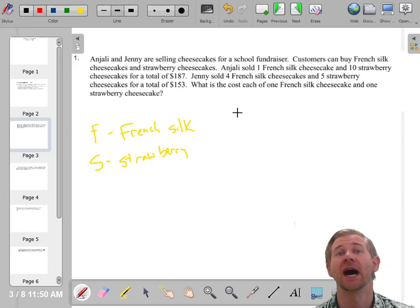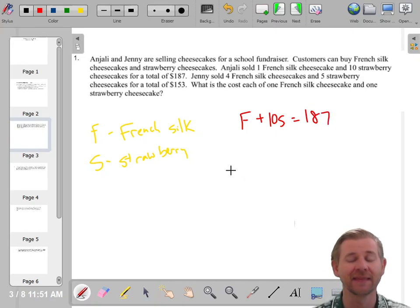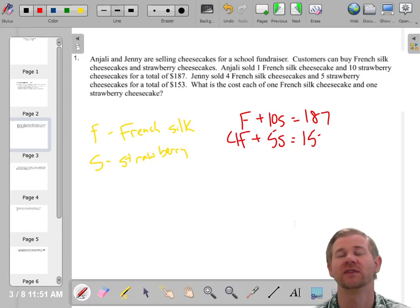So the first thing I'm going to do is say I sold one French silk cheesecake plus, I don't know how much a strawberry cheesecake costs, but I know I bought 10 of them. So if it was $1, it'd be 10 bucks. If it was $2, it'd be 20 bucks. I have to do 10 times whatever an S strawberry cheesecake costs. So one French silk cheesecake plus 10 strawberry cheesecakes, and those add up to 187. Then they told me something else. They said four of those French cheesecakes and five of the strawberry cheesecakes will add up to 153.